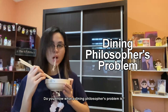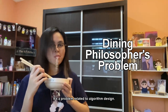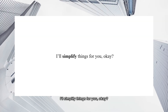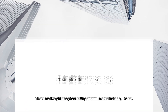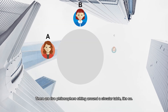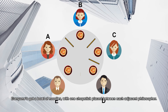Do you know what a dining philosopher's problem is? It's a problem related to algorithm design. I'll simplify things for you. There are five philosophers sitting around a circular table, like so. Everyone's got a bowl of noodles with one chopstick placed between each adjacent philosopher.